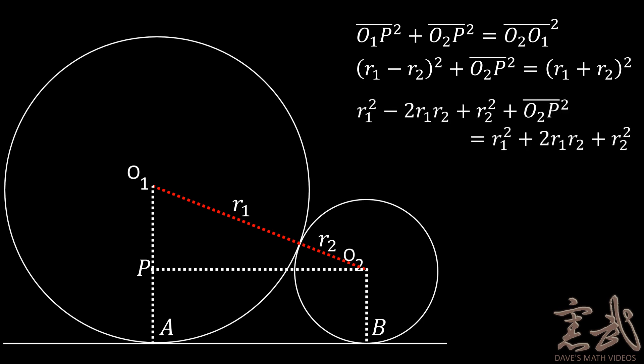We can now expand these terms and we would get R1 squared minus 2 times R1 R2 plus R2 squared plus the length of the segment O2p squared is equal to R1 squared plus 2 times R1 R2 plus R2 squared.